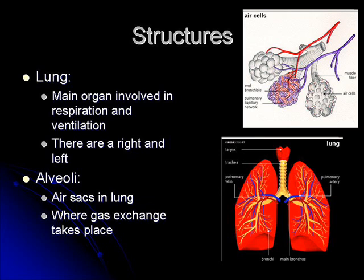All these structures — the alveoli, bronchioles, and bronchi — are within the lungs. The lungs, of course, are your major organ in the process of respiration and ventilation. There's a right and a left lung, and that's why you have the division of the bronchi from the trachea. You can see a nice diagram of that in the bottom right of this slide.